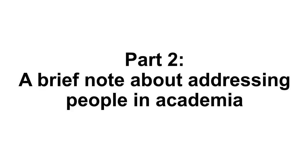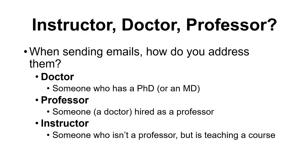Next is the first of what are many tangents that I tend to go off on. This is something I find interesting and useful, but isn't actually relevant for the class and not something you'll be tested on. As an undergraduate, I was never told how I should interact with other people in academia. I found it very intimidating to try and reach out to people because they seemed to have a set of rules I didn't know about. So as soon as I started teaching, I decided I would share those hidden rules. Let's talk about how you address people in academia.